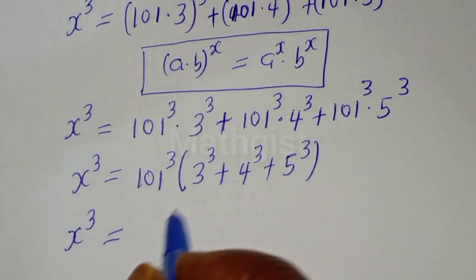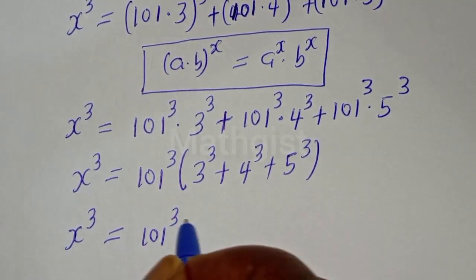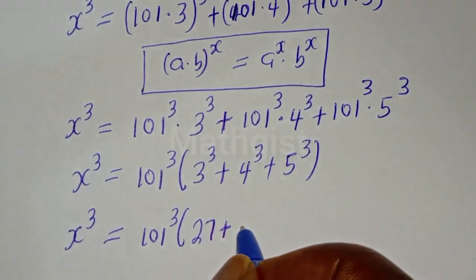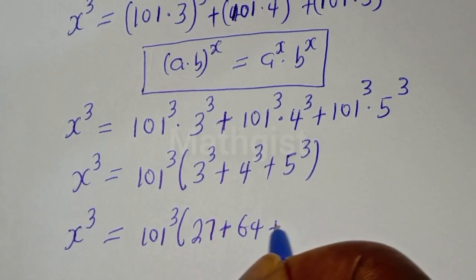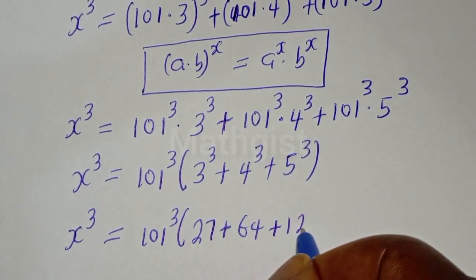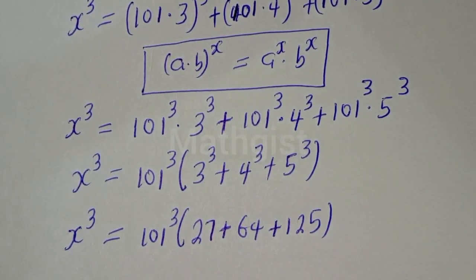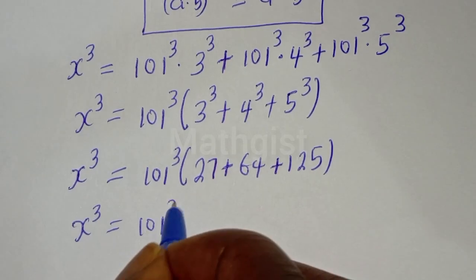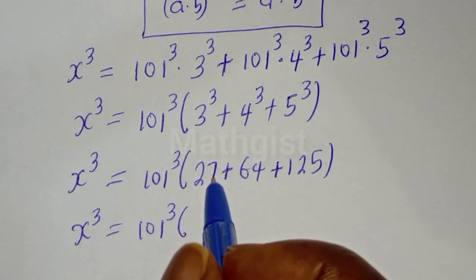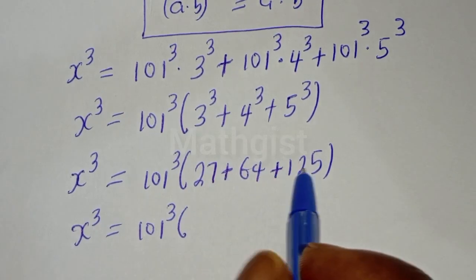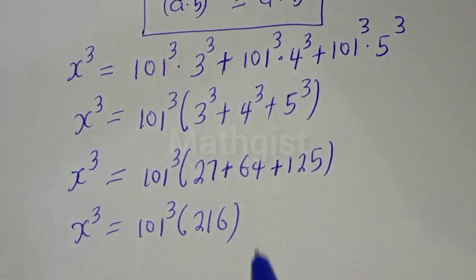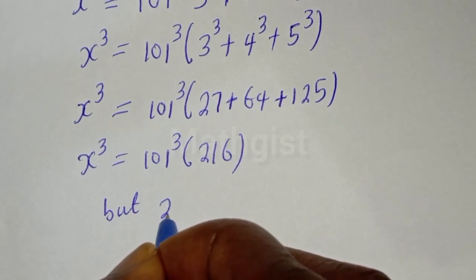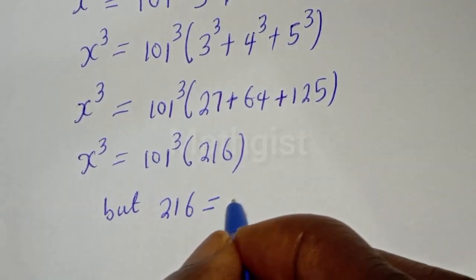S raised to power 3 is equal to 101 raised to power 3, bracket: 3 raised to power 3 is 27, plus 4 raised to power 3 is 64, plus 5 raised to power 3 is 125. S raised to power 3 is equal to 101 to the power of 3, bracket 27 plus 64 plus 125, that is 216. And 216 is equal to 6 raised to power 3.